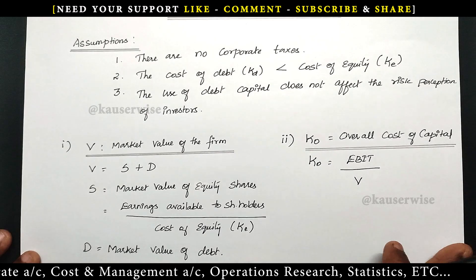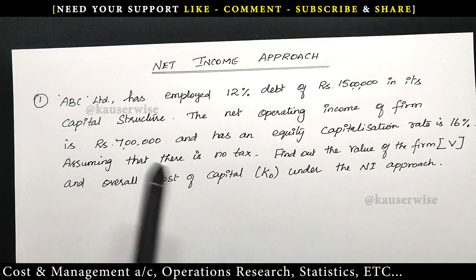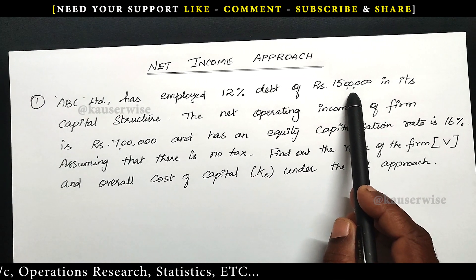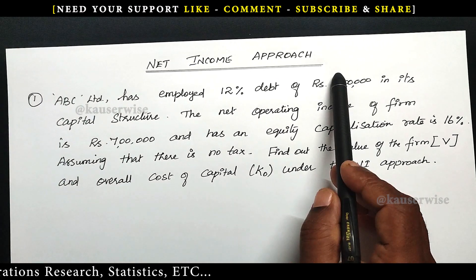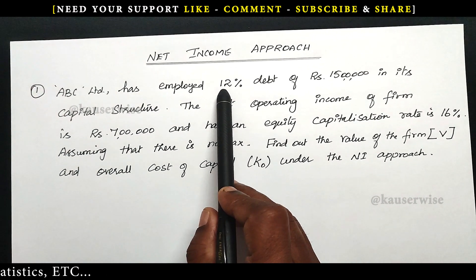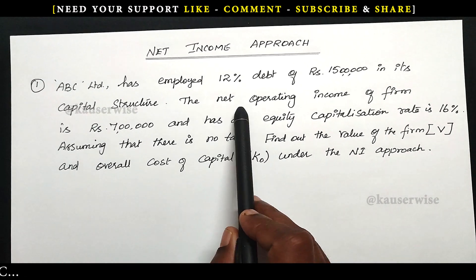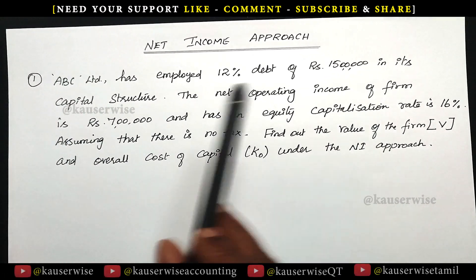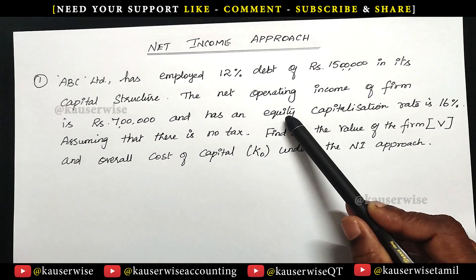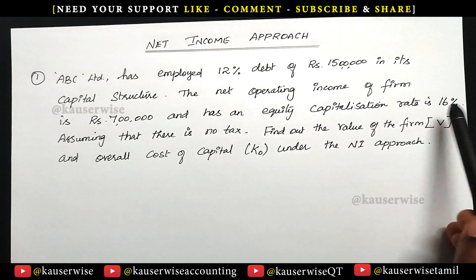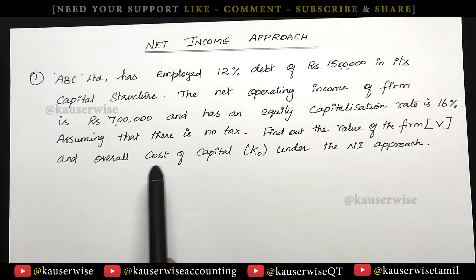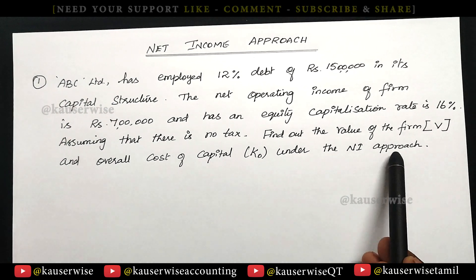Now let's see the numerical problem. ABC Limited has employed 12% debt of 15 lakhs — that is, 15 lakhs of debentures — in its capital structure, with an interest rate of 12%. The net operating income of the firm is 7 lakhs. The equity capitalization rate, that is KE, is 16%. Assuming there is no tax, find out the value of the firm and overall cost of capital under the net income approach.